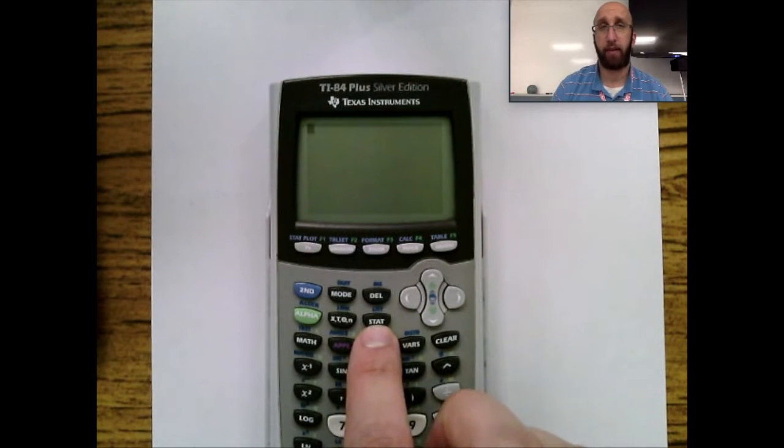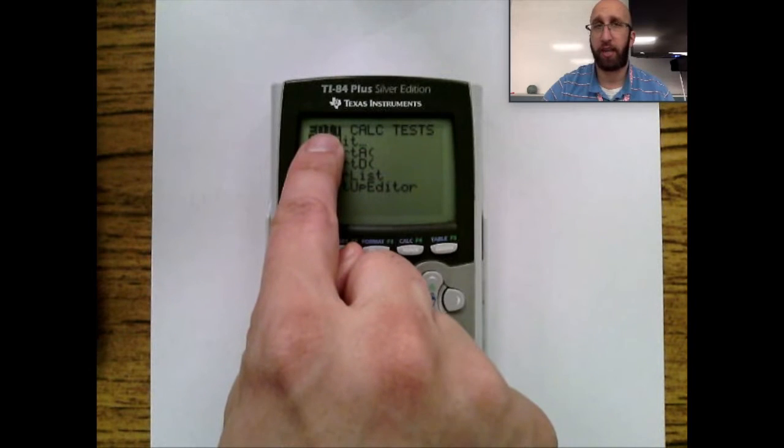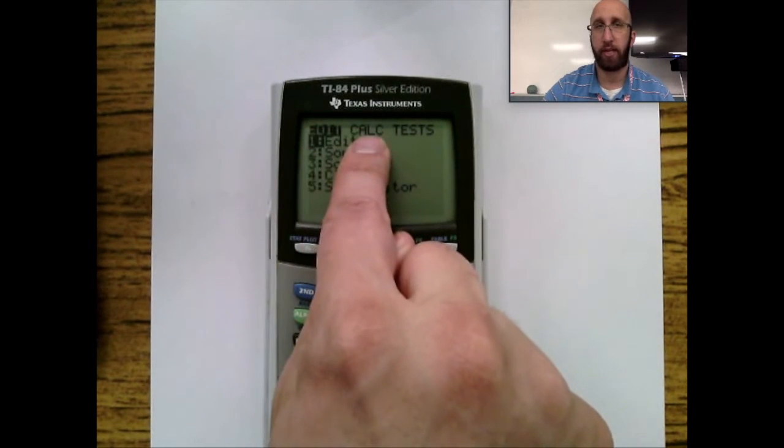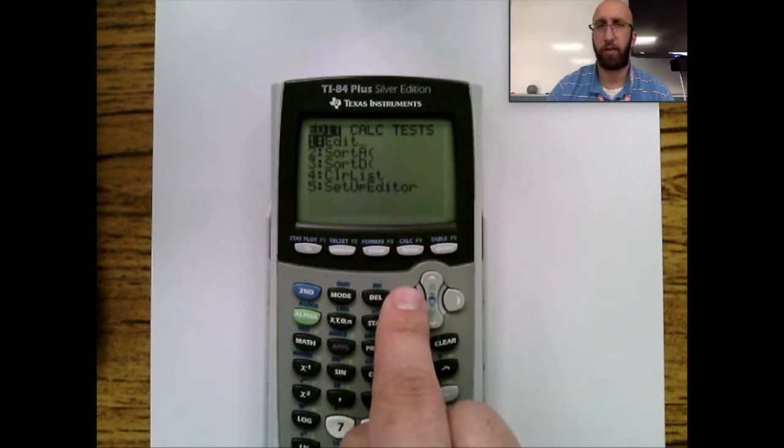Let's quickly go over what's in there. Think of these as tabs: a tab for Edit, a tab for Calc, a tab for Test. You can use the arrows right and left to get through those. This Edit tab is basically how you give data to your calculator.